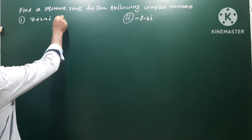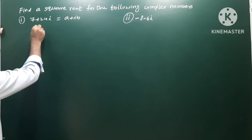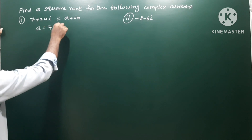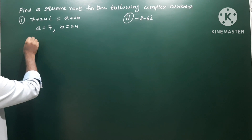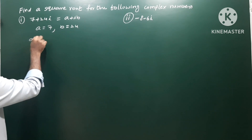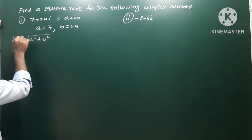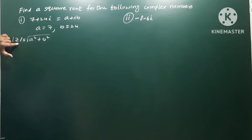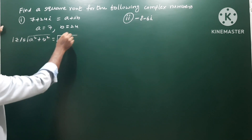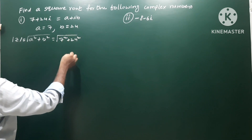So given the complex number a plus ib to compare, we get the values: a is equal to 7, b is equal to 24. So next, a squared plus b squared. The value root of a squared plus b squared — mod z is equal to root of a squared plus b squared. So to find mod z of the complex number, we compute root of 7 squared plus 24 squared.